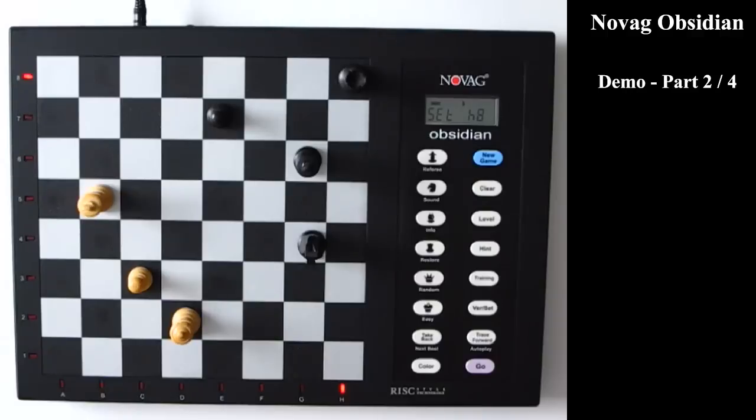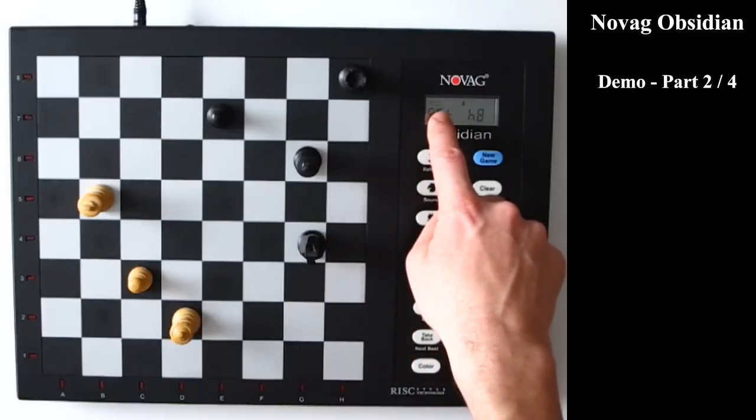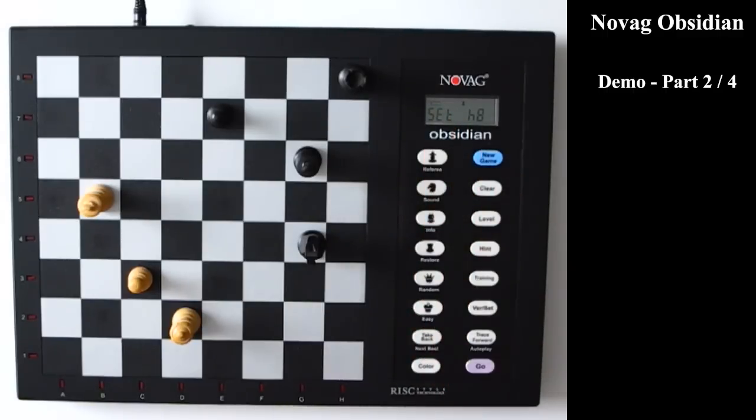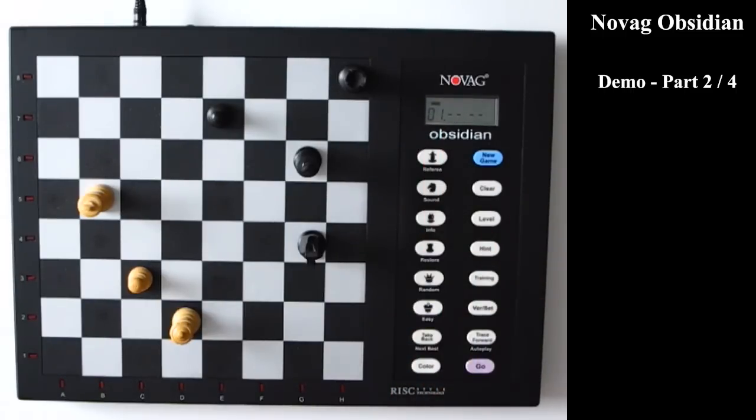So now if I want white to start, then first I have to switch the color to white again. So that here in the little rectangle it says white. And then I press go. I can change that again by entering the set mode again. Now I change the color to black. As you see in the LCD. And now I press go. And now it is black that should make the first move.